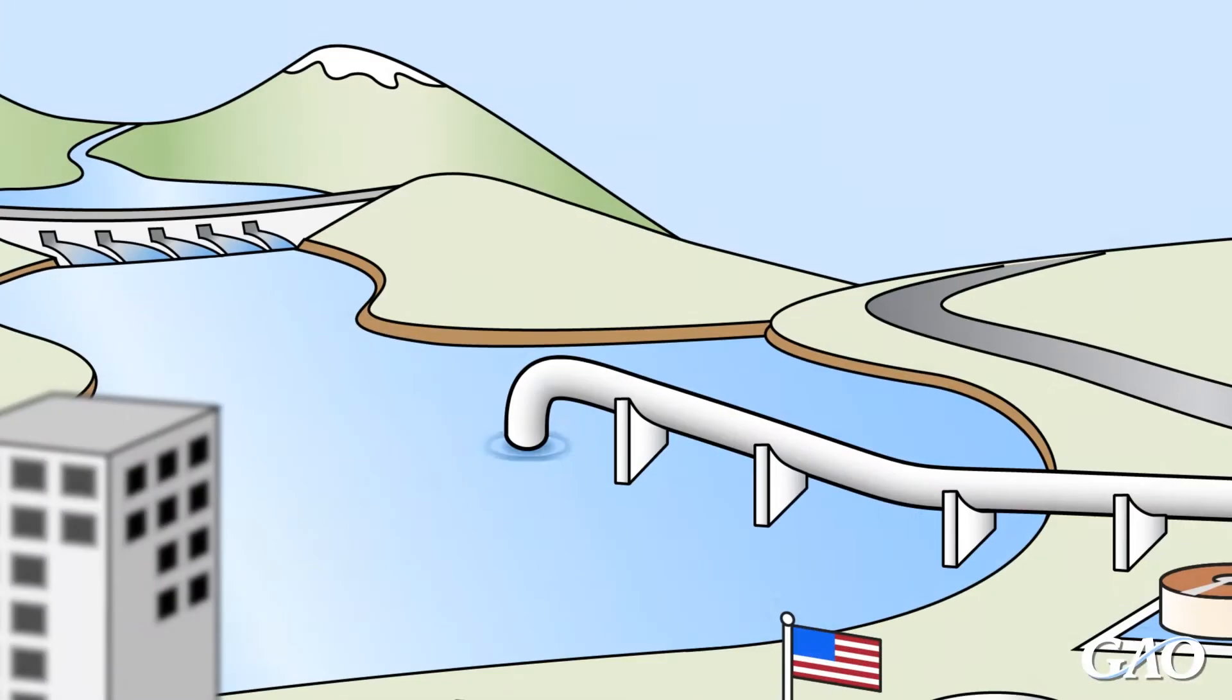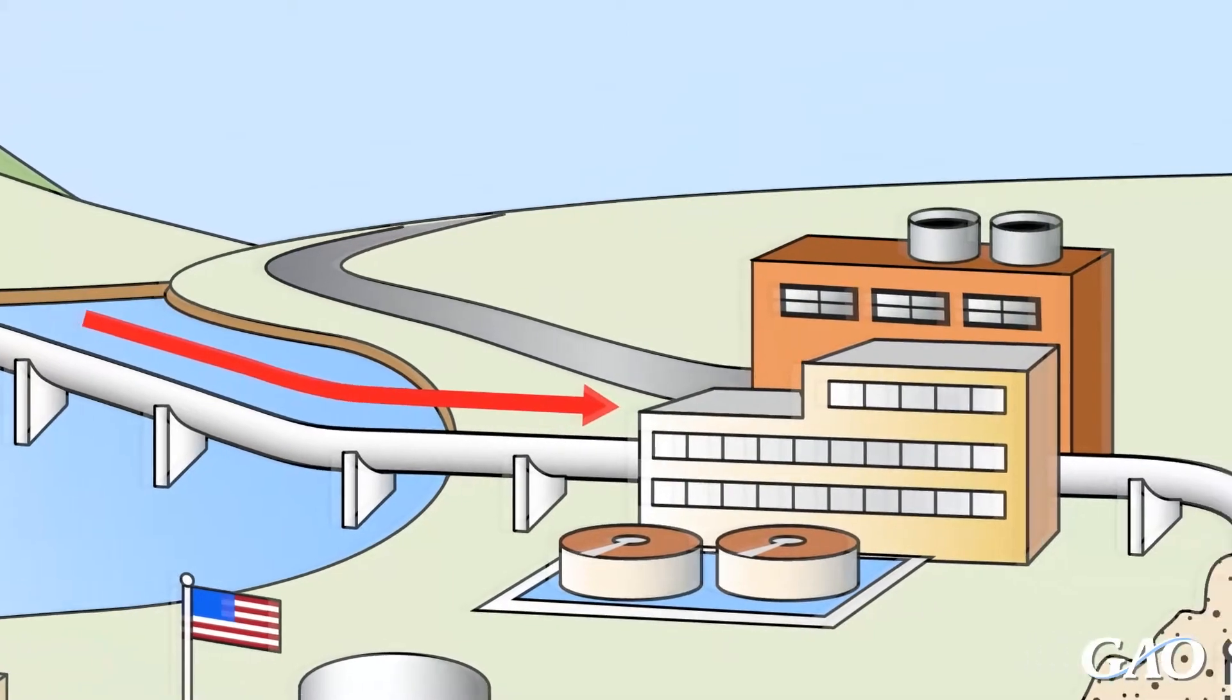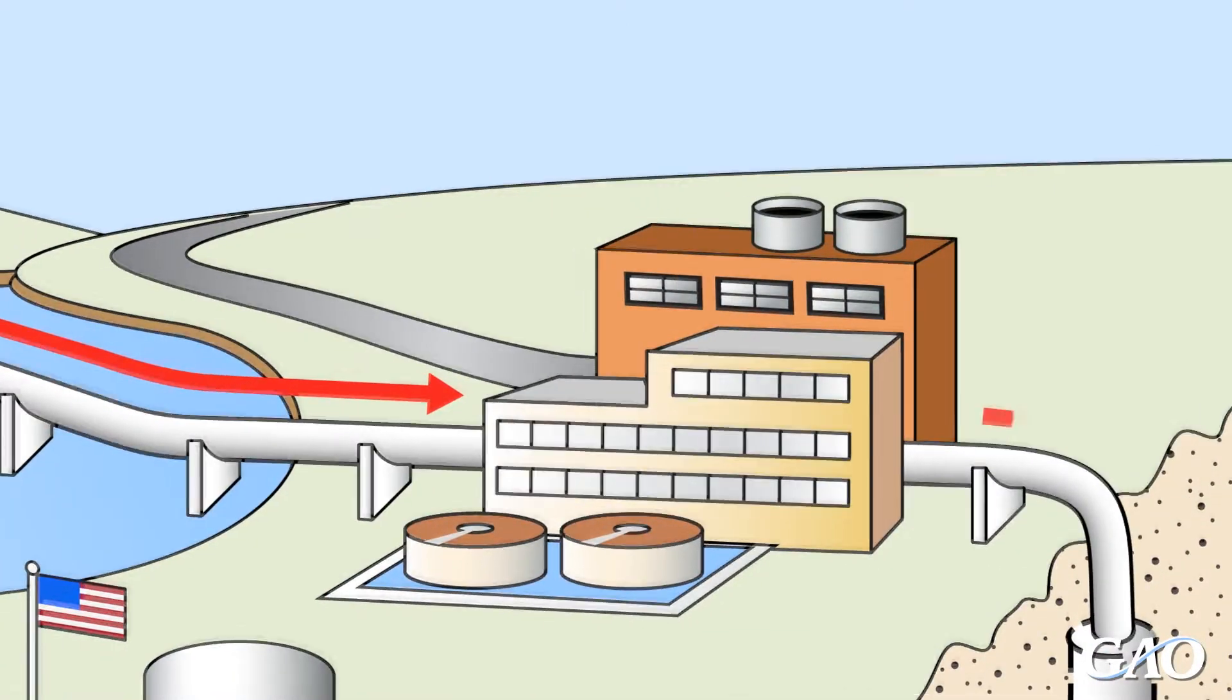Here's a look at a water system. Water can come from an underground source like an aquifer or an above-ground source like a river or reservoir. It's piped from the source to a water treatment facility.